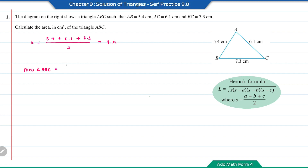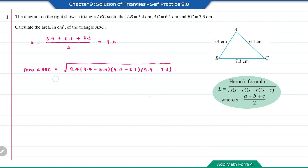The area of triangle ABC equals the square root of the semi-perimeter 9.4, times (9.4 minus 5.4), times (9.4 minus 6.1), times (9.4 minus 7.3). The answer is equal to 16.14 cm².